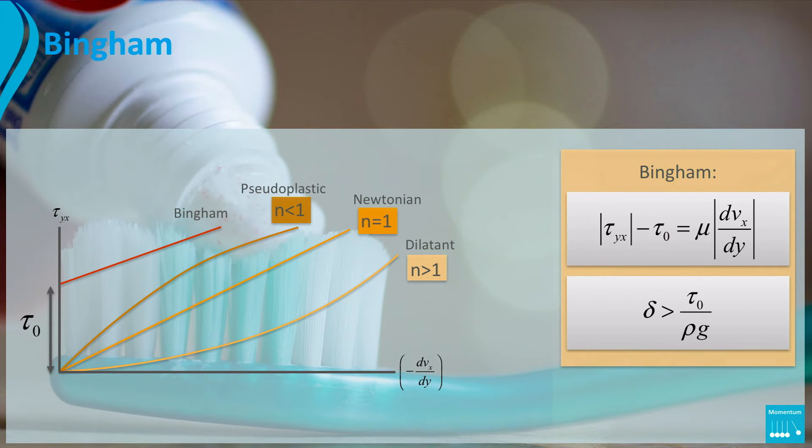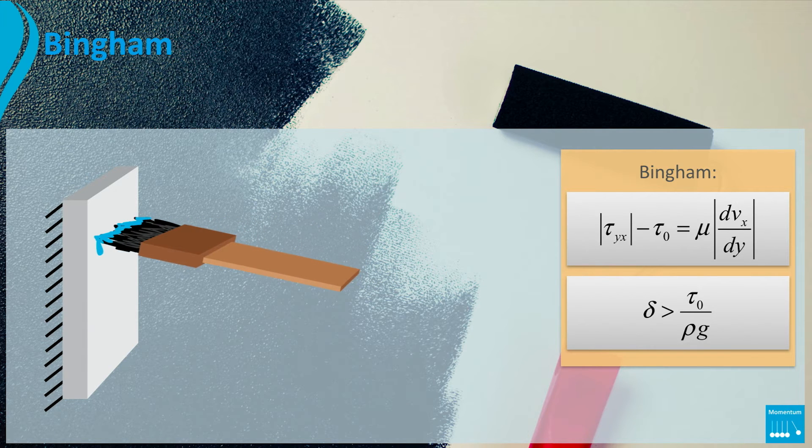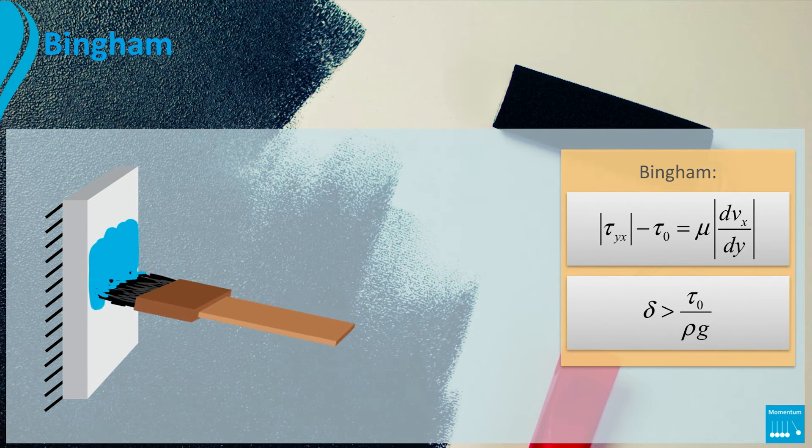This means that toothpaste only starts to flow if the yield stress is higher than the critical value of tau0. You could wonder when does my Bingham paint start to drip? That means that the fluid flows slowly downwards along a vertical wall.